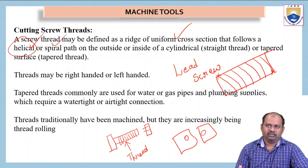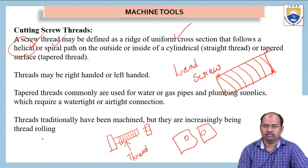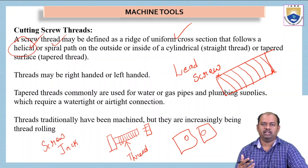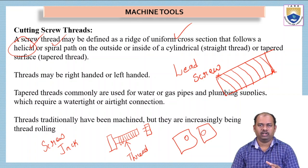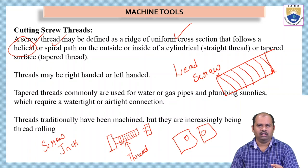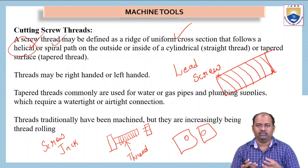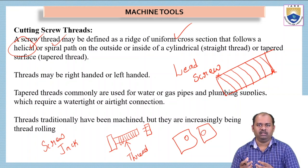We have many applications of threads, starting from the nut and bolt arrangement to the screw jack. The screw jack is a device used for lifting cars or trucks in order to replace the wheels. If we want to remove the wheels, we use a screw jack — also called a safety jack. Inside the screw jack, we have a screw thread arrangement. When we rotate the screw, it moves up the vehicle so that we can simply replace the wheel.